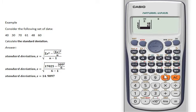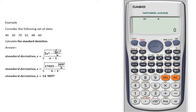Once done, press the AC button to clear the screen. Here is the formula to find the standard deviation. You need to have the summation of x squared, summation of x, and the value of n. These values can be obtained from the calculator.